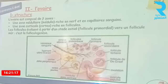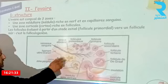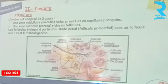On va détailler la structure des gonades, l'ovaire. En coupe transversale, l'ovaire montre une partie centrale richement vascularisée, riche en vaisseaux sanguins et en nerfs, avec des follicules tout au long de la périphérie. On distingue deux zones : une zone médullaire riche en nerfs et en capillaires sanguins, et une zone corticale riche en structures spéciales appelées follicules. On note la présence des follicules en plusieurs stades.